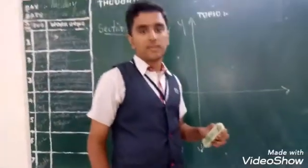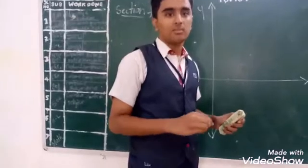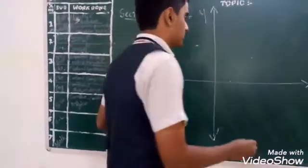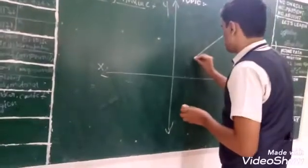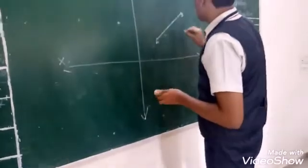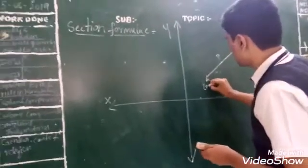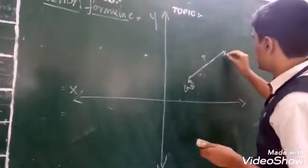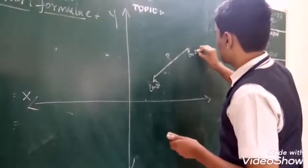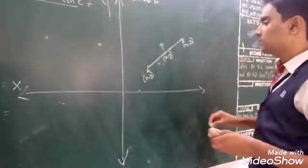This formula is used to find a point P which divides a line segment AB in the ratio of M is to N. So first take a line segment AB, where A is X1 comma Y1, B is X2 comma Y2, and P is X comma Y, where P is not the midpoint of AB.